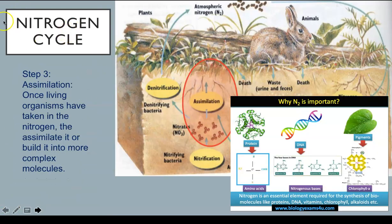Step three in the nitrogen cycle is assimilation. Once living organisms have taken in the nitrogen, they assimilate it or build it into more complex molecules. Protein synthesis in cells turns inorganic nitrogen compounds into more complex amino acids, which then join to form proteins. Nucleotides are the building blocks of DNA and these also contain nitrogen.